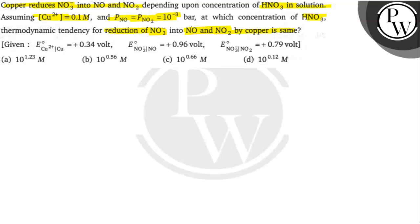Toh, pehle equation likte hai. First equation will be: 3 Cu plus 8 H plus plus 2 NO3 minus gives rise to 3 Cu2 plus plus 2 NO plus 4 H2O.